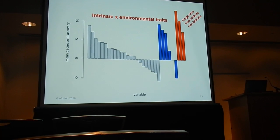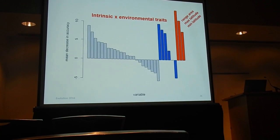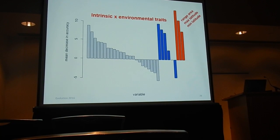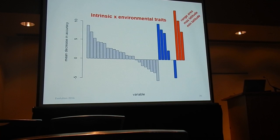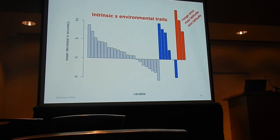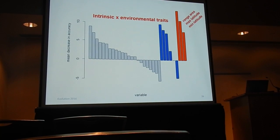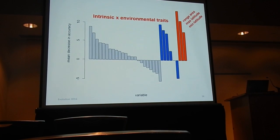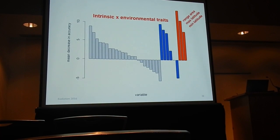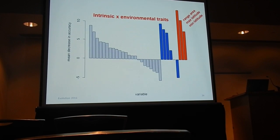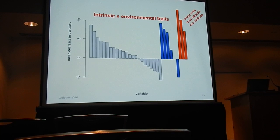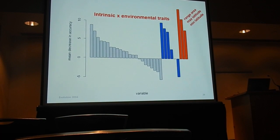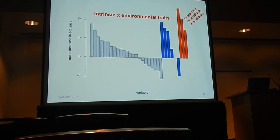Things like range area — the size of the range — and maximum and minimum latitude are important predictors. What this suggests is that these species are all evolving in the environments they're living in, and traits that interact between the environment and properties of the species are important predictors of isolation by distance.